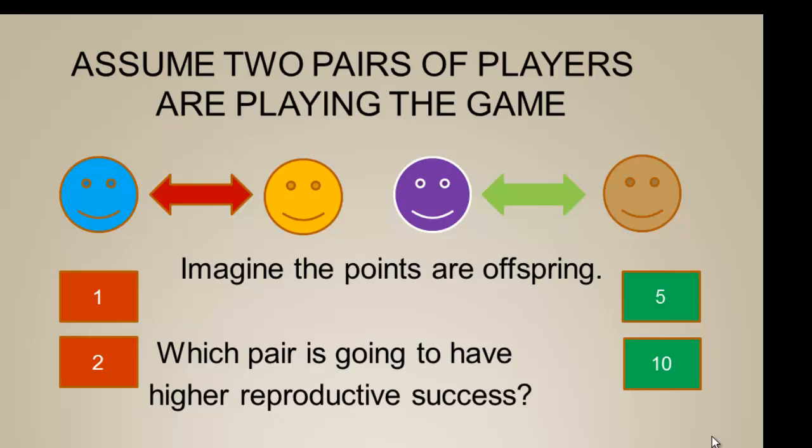But in terms of the prisoner's dilemma, if they're thinking in terms of their own self-interest and knowing that the other person is going to do the same thing, the game should always land in the defect corner.